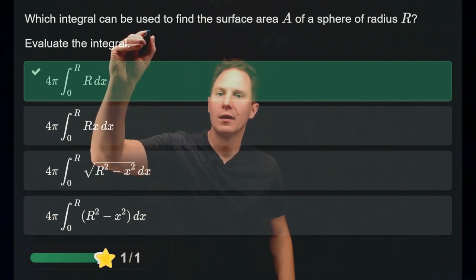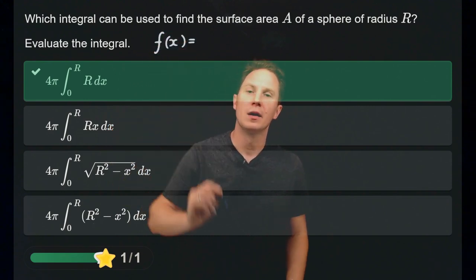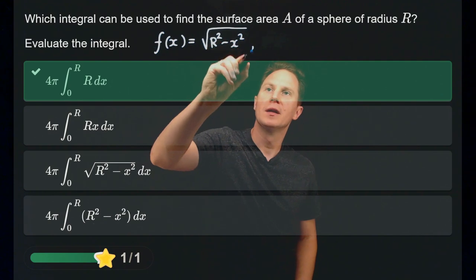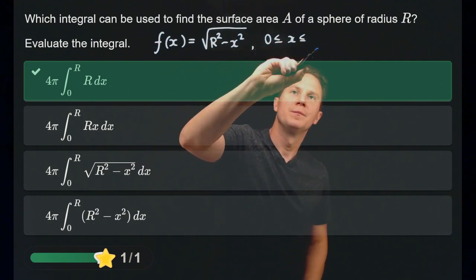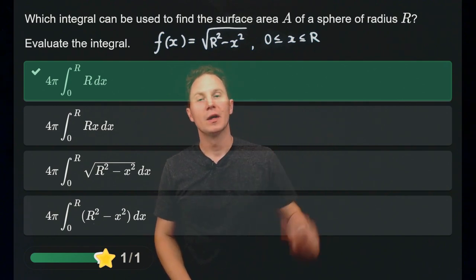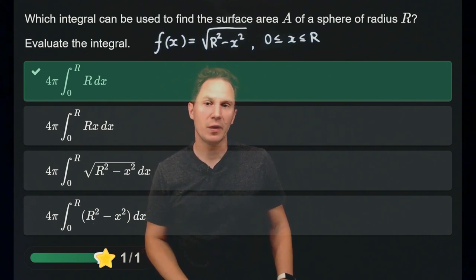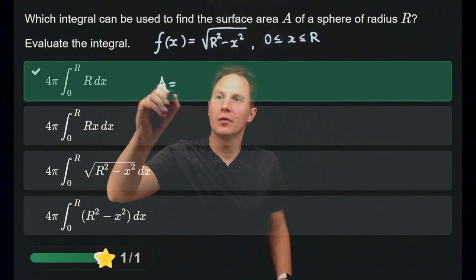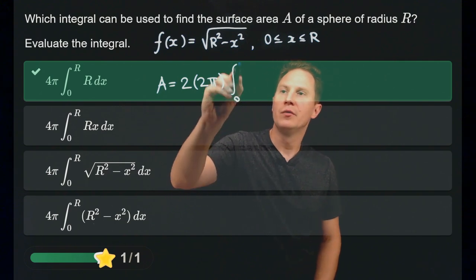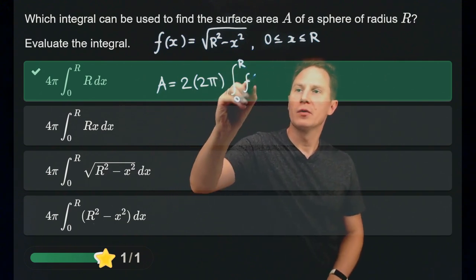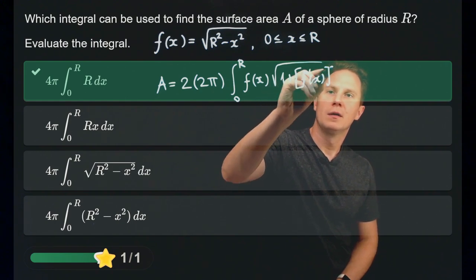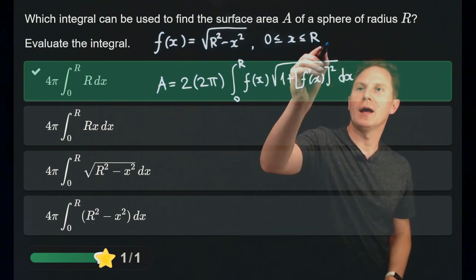Let's see how that's obtained. To find the area of a sphere of radius r, we consider the function f(x) = √(r² − x²). As x varies from 0 to r, we get a quarter circle in the first quadrant of radius r centered at the origin. Rotating that about the x-axis gives half a sphere, so for the total surface area of the sphere we need to multiply by 2. That gives 2 times 2π times the integral from 0 to r of f(x) times √(1 + f′(x)²) dx.